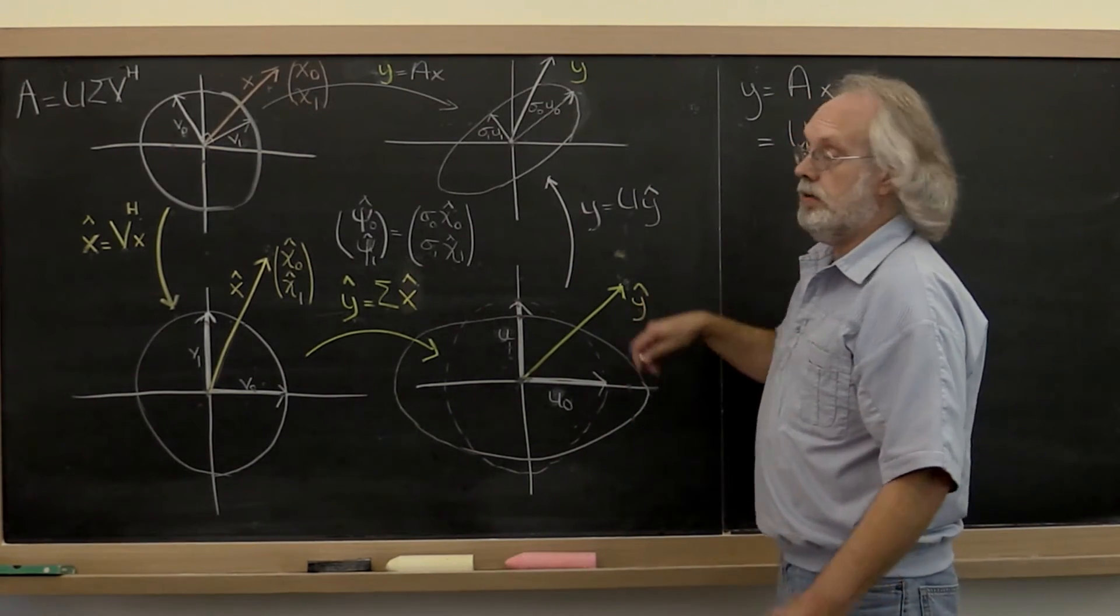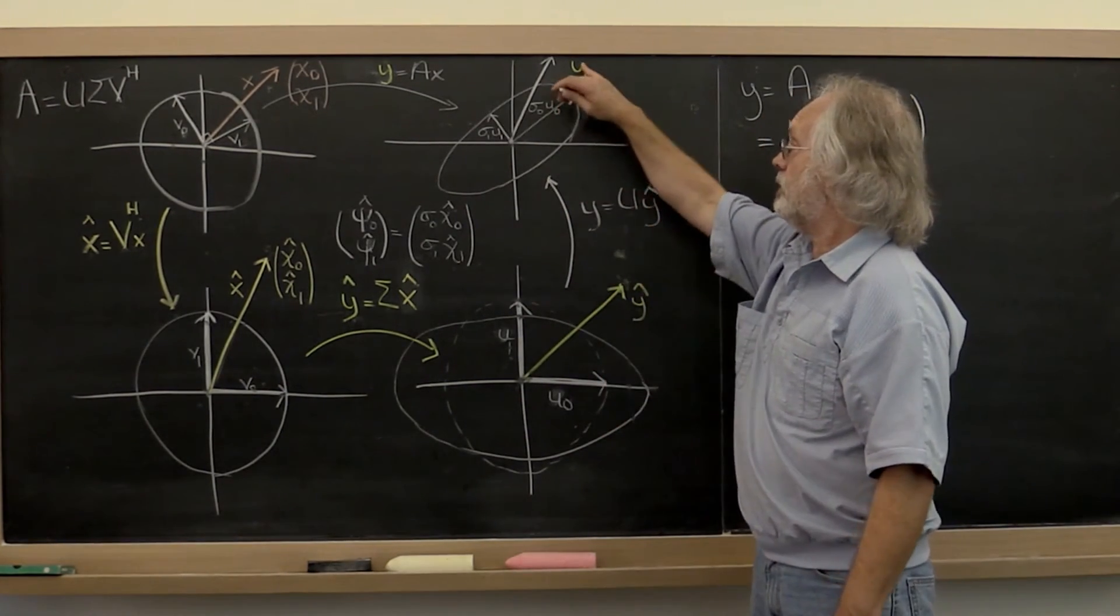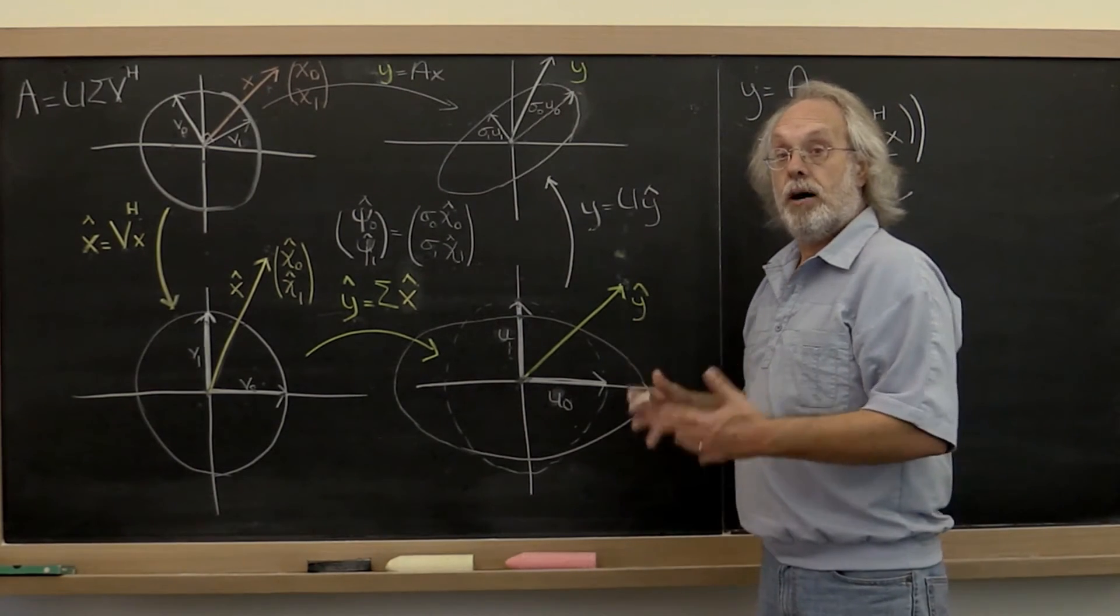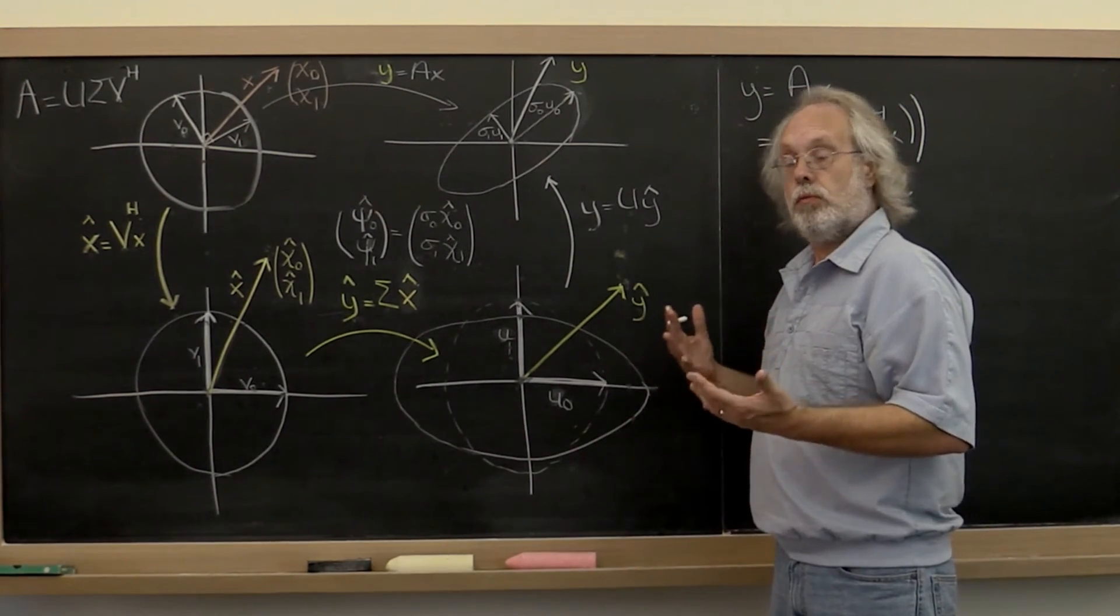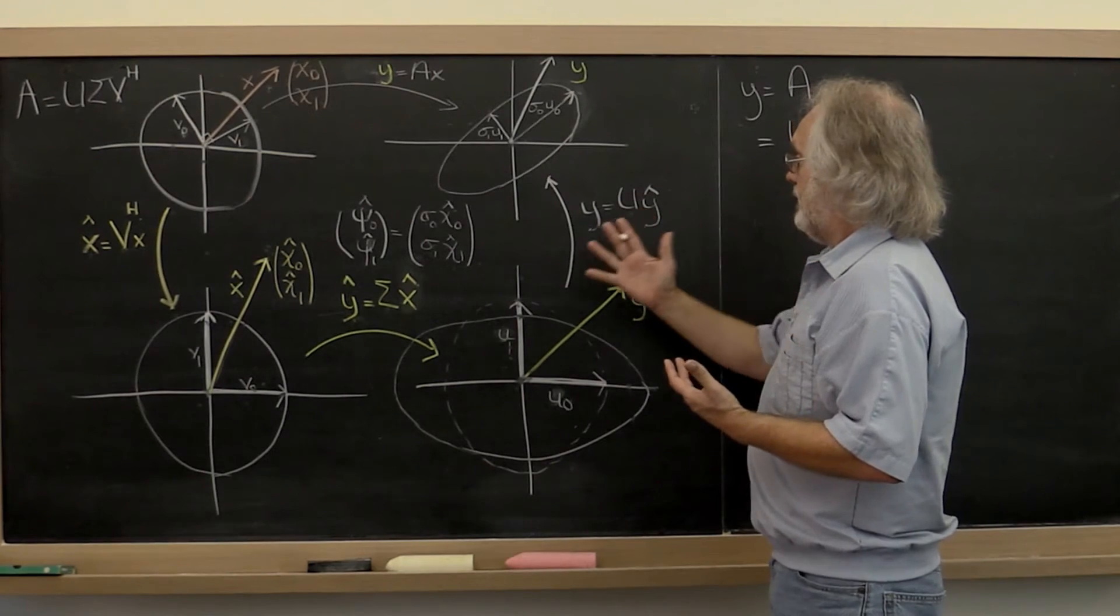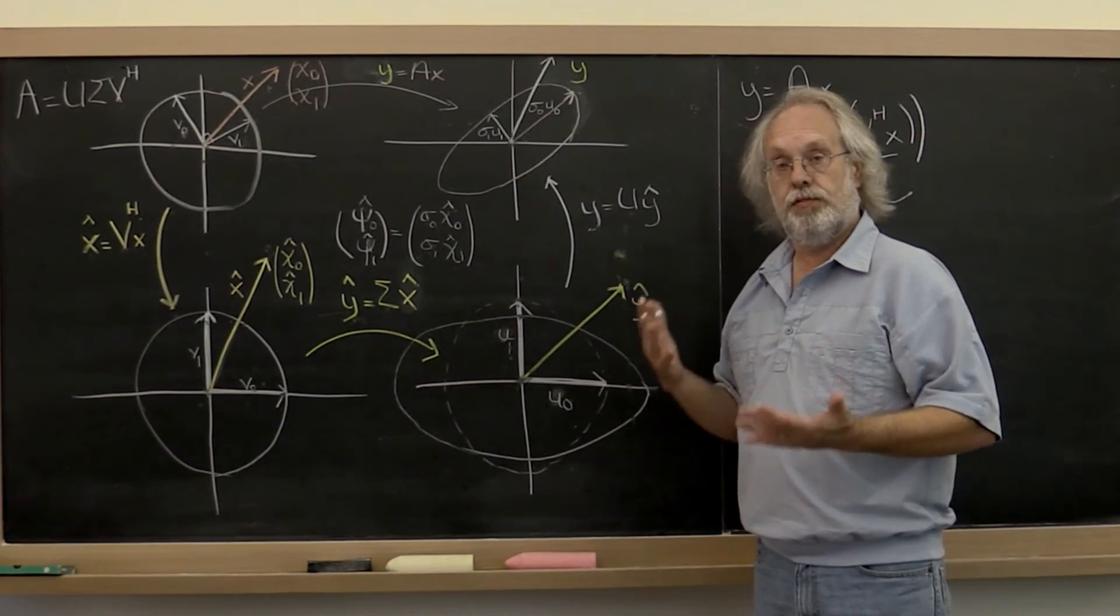So now this here gives us the coefficients for our final result, but with respect to the orthonormal basis that you find as the columns of matrix U.